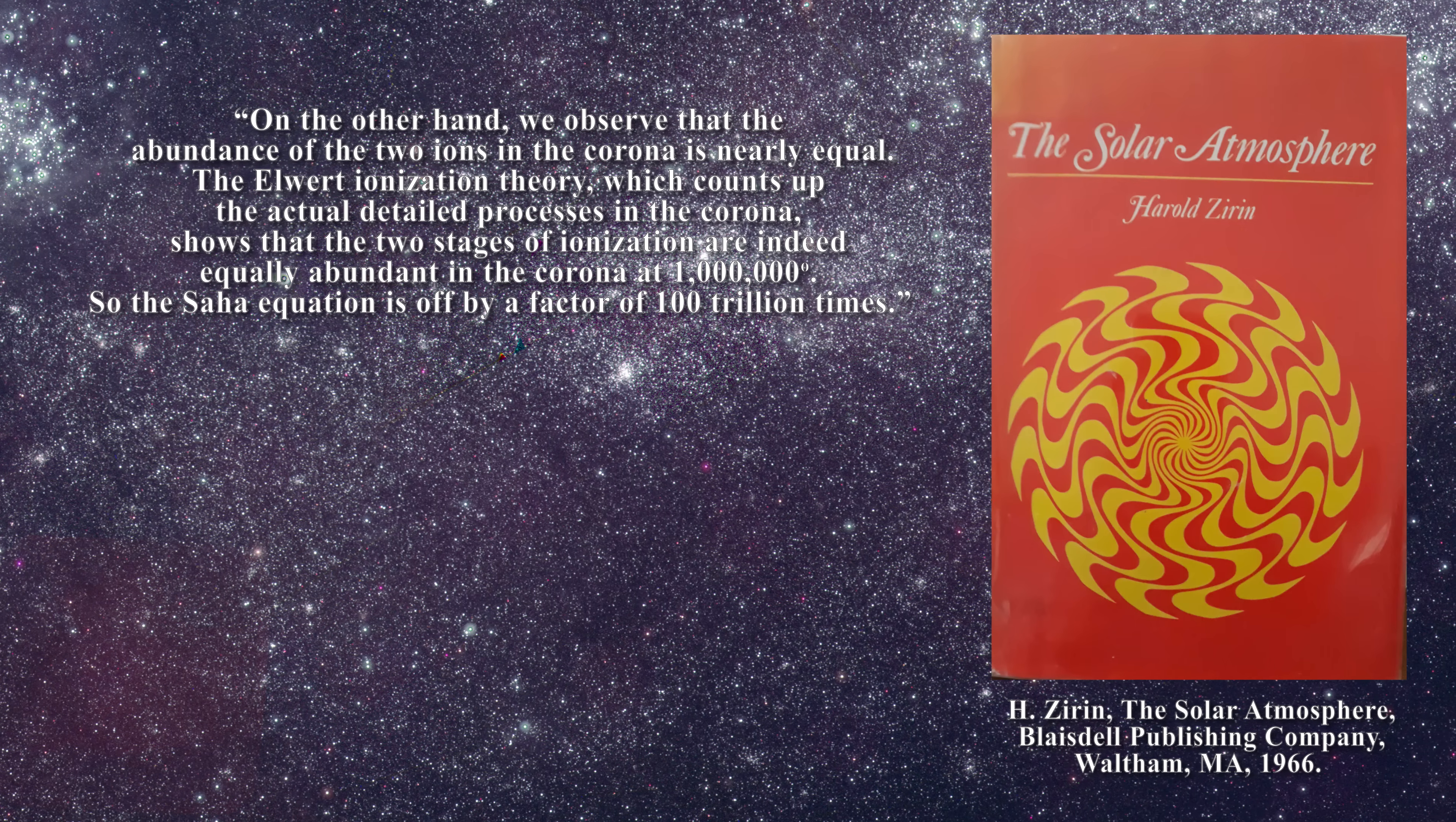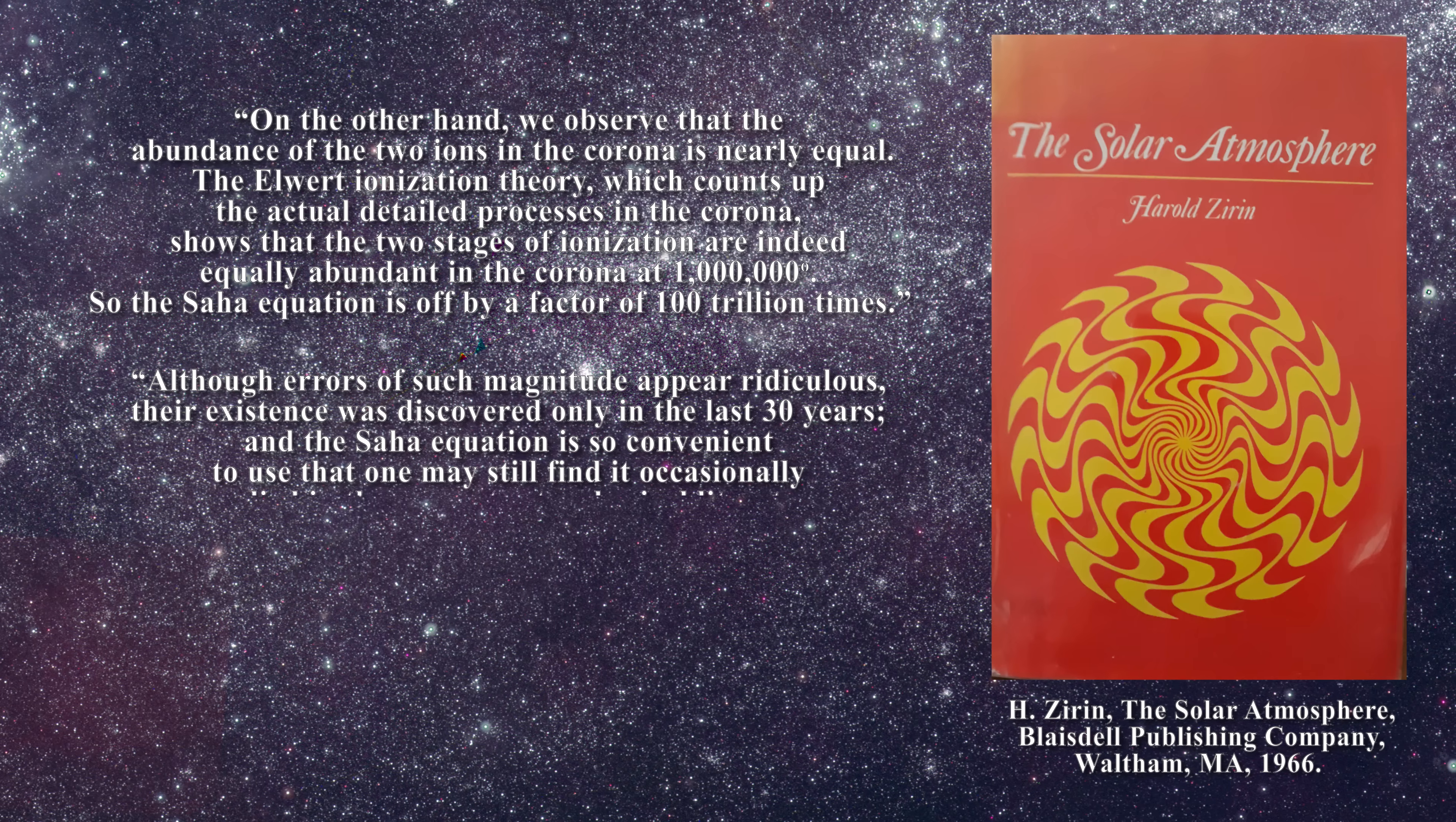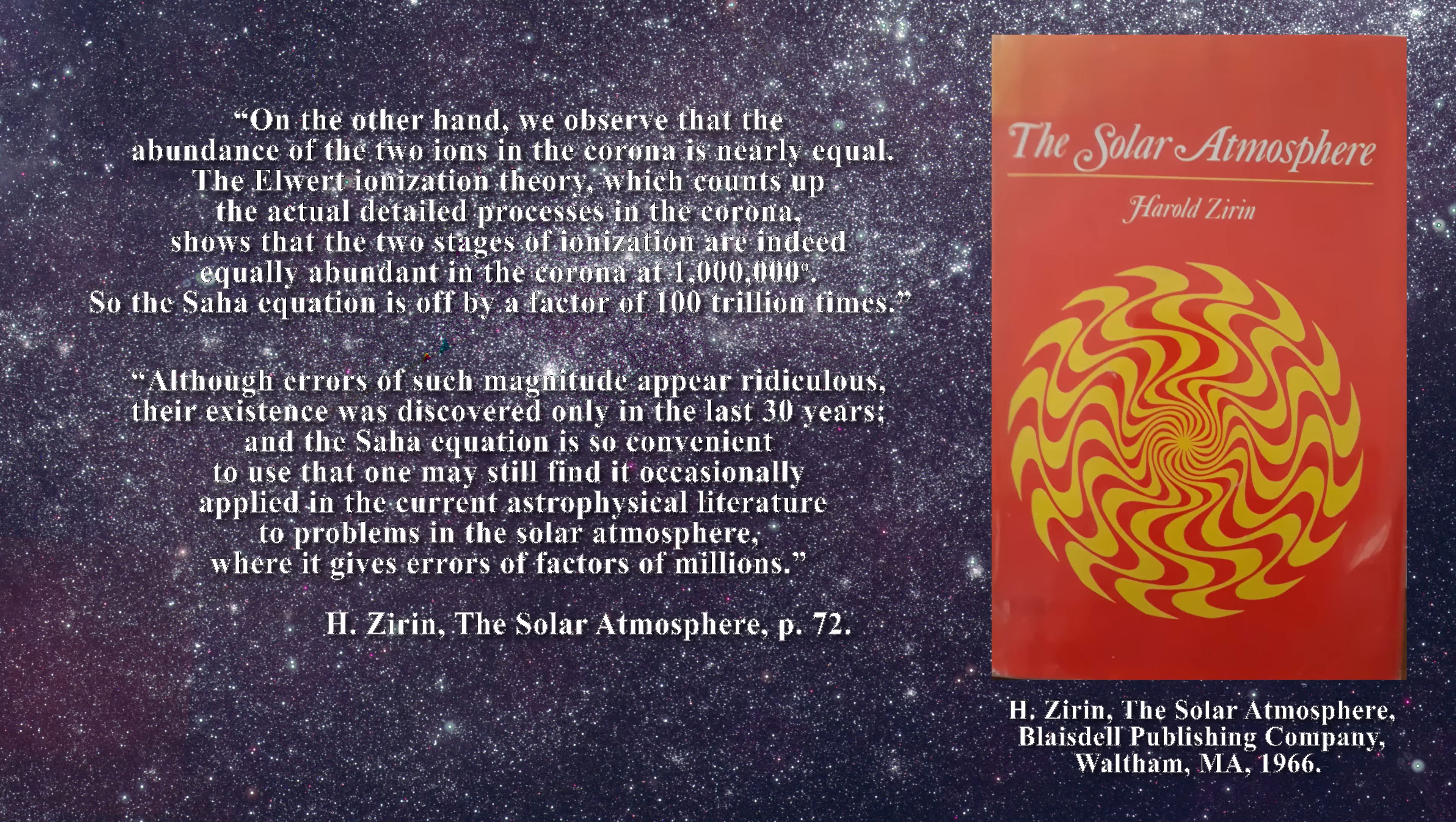So the Saha equation is off by a factor of a hundred trillion times. He goes on, Although errors of such magnitude appear ridiculous, their existence was discovered only in the last 30 years, and the Saha equation is so convenient to use that one may still find it occasionally applied in the current astrophysical literature to problems in the solar atmosphere, where it gives errors of factors of millions.